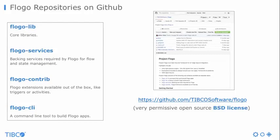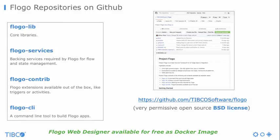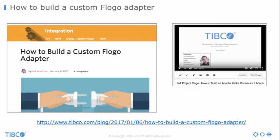Here's the source code of FLOGO. There are a few repositories for the core libraries and backing services for managing state and flows. You have the contrib project with connectors and activities for connecting to different technologies, and the command line project also implemented in Go. All this is on GitHub under the very permissive open source BSD license. The FLOGO Web Designer is also available for free as a Docker image. I created a short 15-minute video about how to build a custom adapter for FLOGO — I built one for Apache Kafka — which shows in a few minutes how easy it is to extend FLOGO.